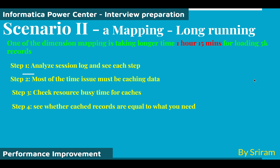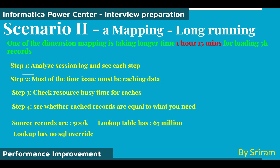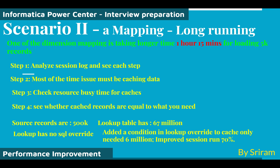The facts of this dimension mapping: source records are 500k, and the self-lookup table has 67 million records with no SQL override. Without an SQL override, there is no condition to reduce the number of records, so the lookup caches all 67 million records before processing begins. The fix is to add a condition in the lookup SQL override so it only caches the six million or fewer records needed for the 500k input. This improved session performance by 70%, completing in about 15 minutes.